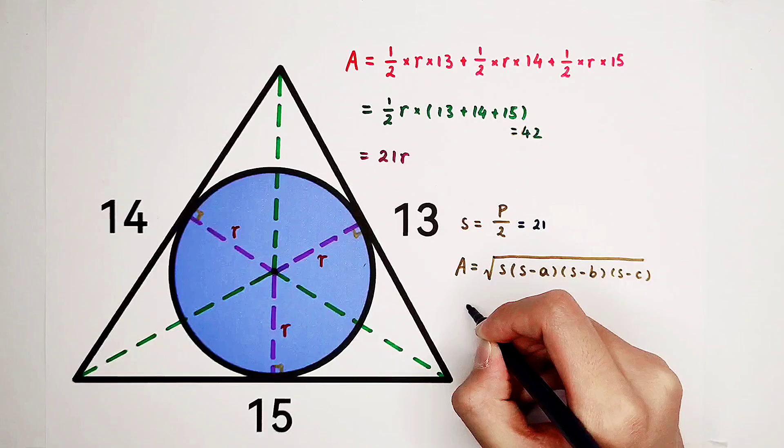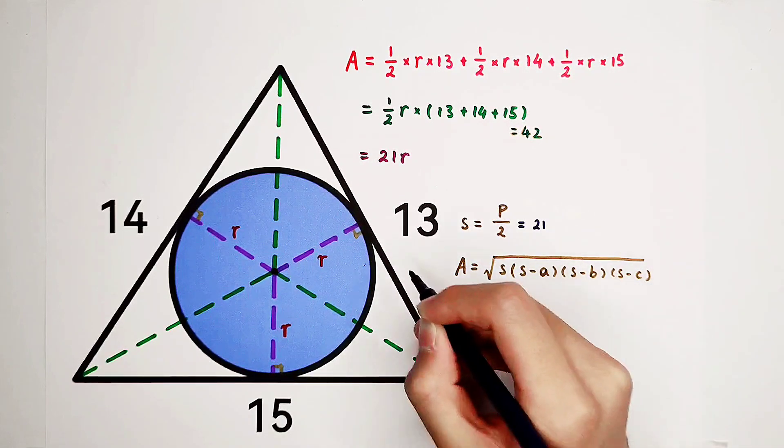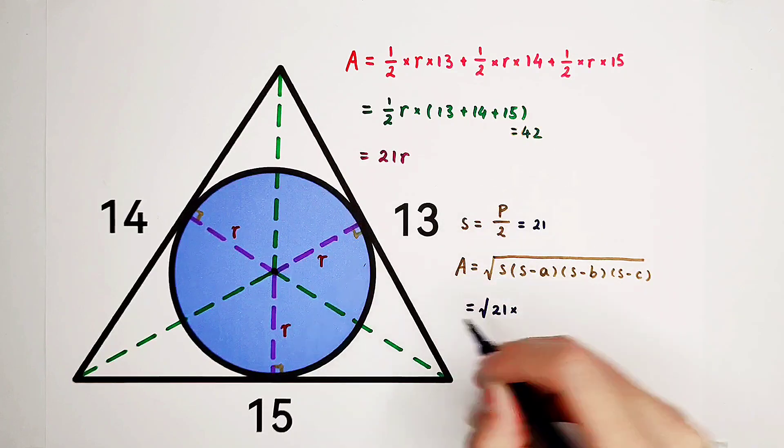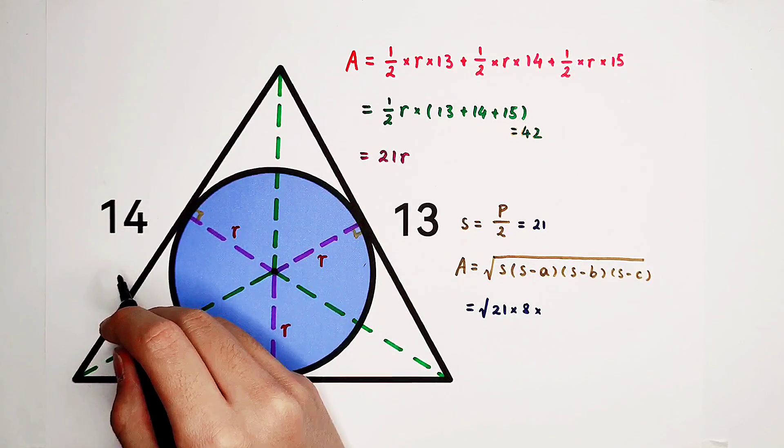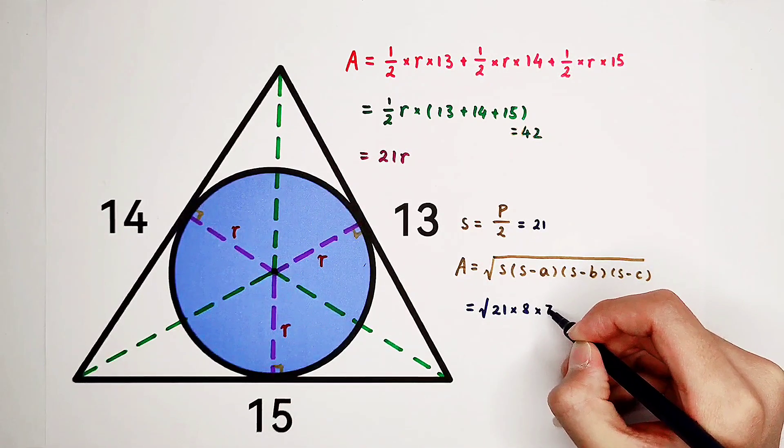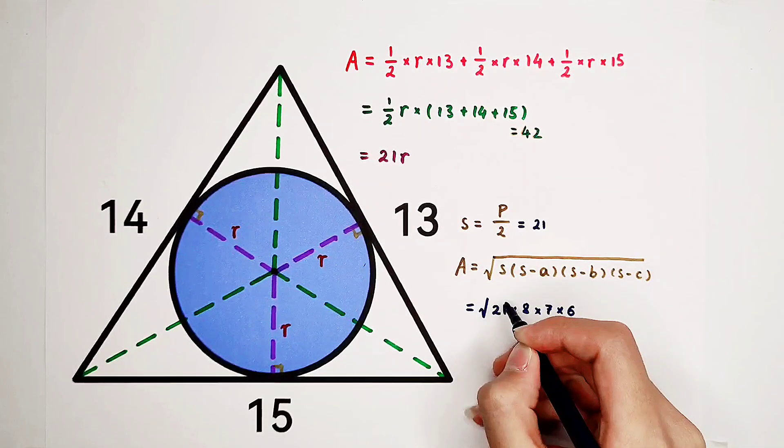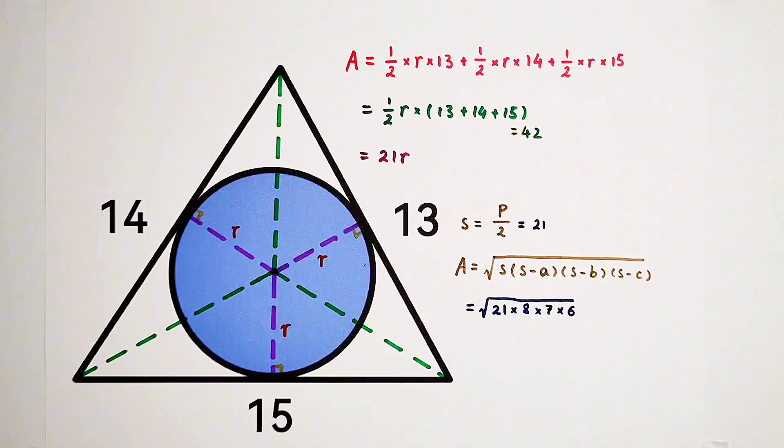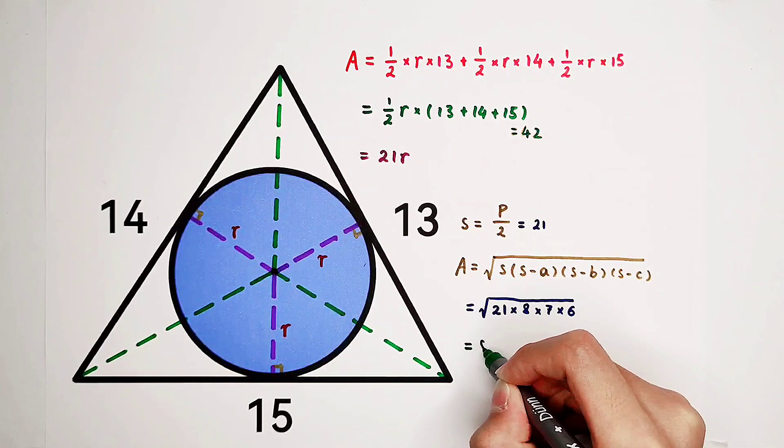So that means this is gonna be the square root of 21 times 21 minus 13 is 8 times 21 minus 14 is 7 times 21 minus 15 is 6. And the answer is gonna be 84.